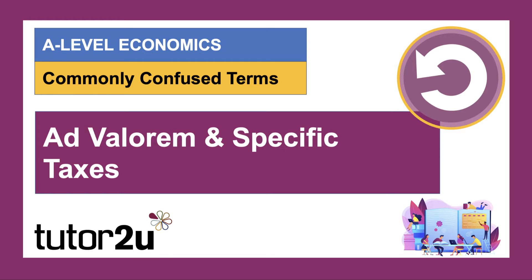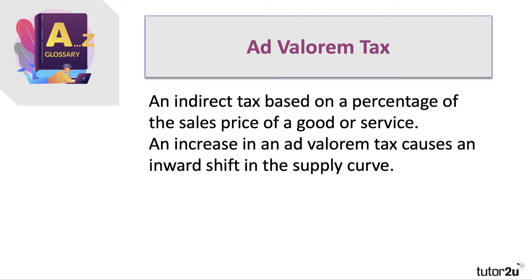The first commonly confused pair is ad valorem and specific taxes. Look to see, if you get a question on intervention, which tax is being introduced. An ad valorem tax is based on the percentage of the sales price of a good or service — for example, VAT at 20%. An ad valorem tax, if it goes up, causes a pivotal inward shift in the supply curve.